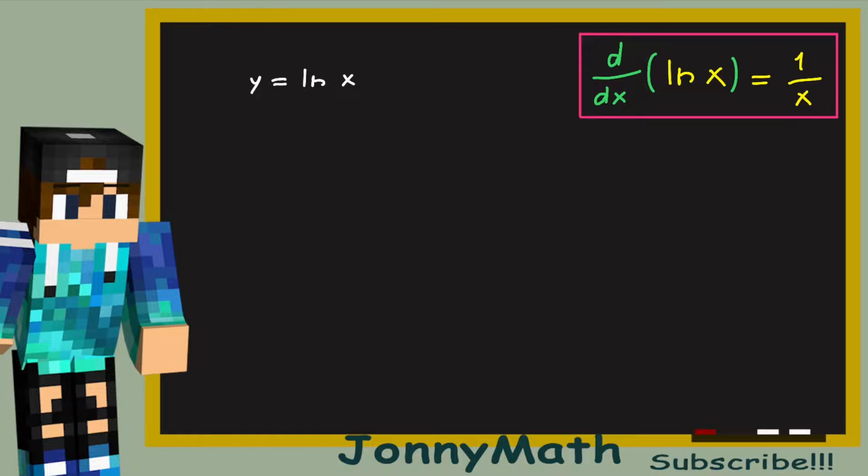Now, to find this derivative, we can rewrite this formula in another way, because we know that the natural log is the opposite of the exponential function. So we know that e to the y equals x. This is a very famous identity between exponentials and logarithms.